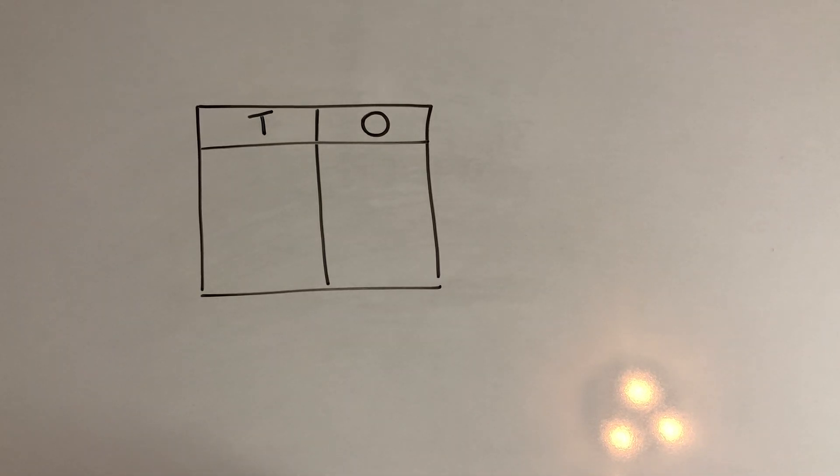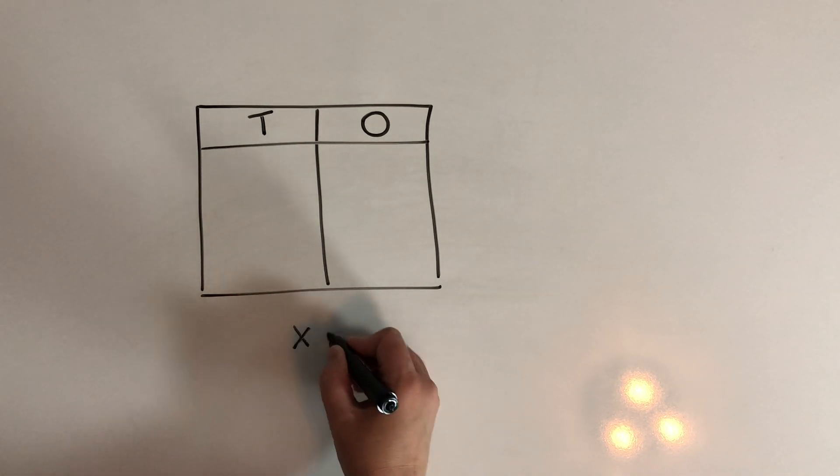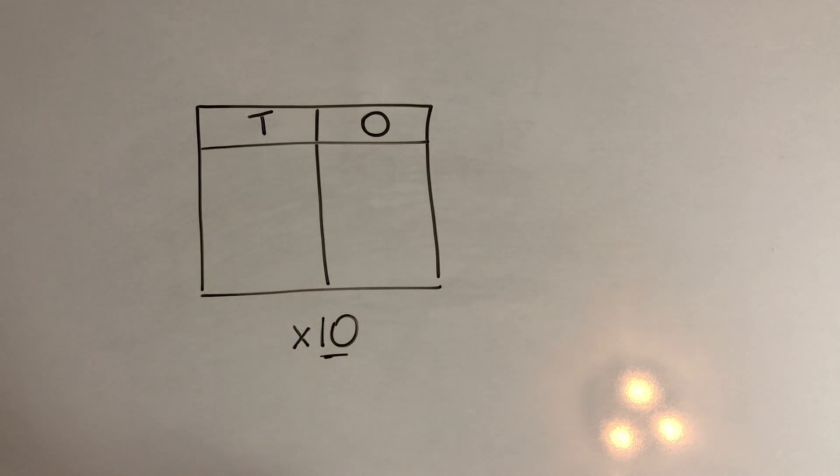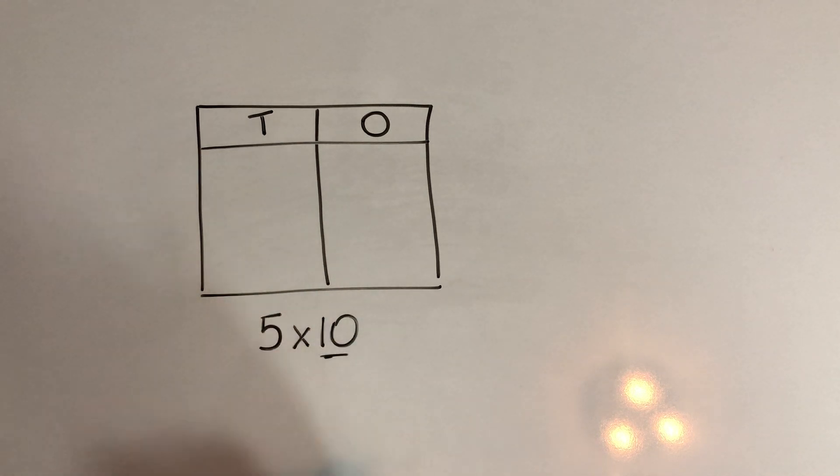Let's talk about multiplying by 10. So when we multiply by 10, it's really important to know what is happening to the number that we're multiplying. And what we do when we multiply something times 10 is we make it 10 times bigger. So if we are multiplying 5 times 10, we are going to make that 5 ten times bigger than it is.